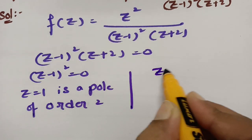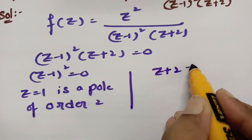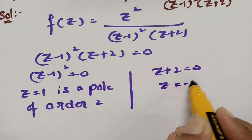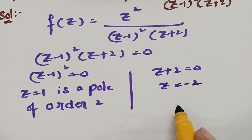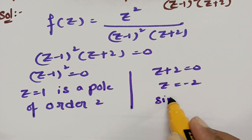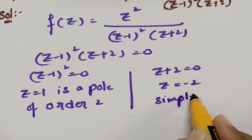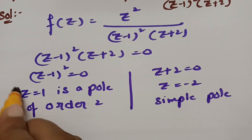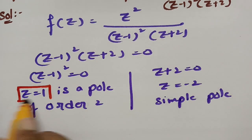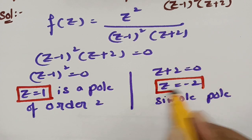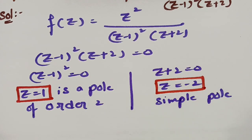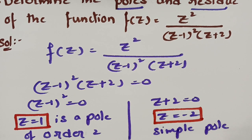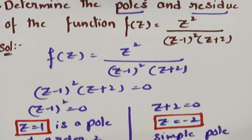Next, if I equate (z+2) to 0, then z = −2, which is a simple pole. So the first pole is z = 1 of order 2, and the next pole is z = −2, which is a simple pole.